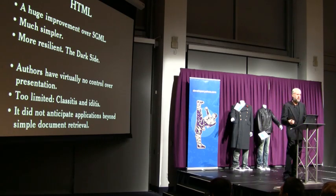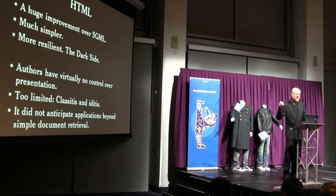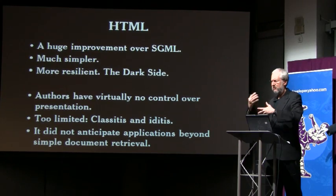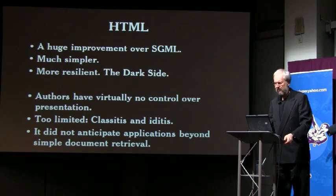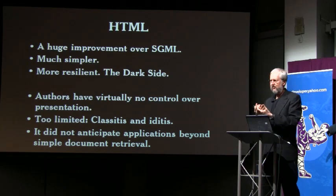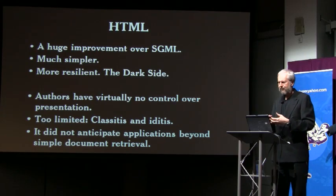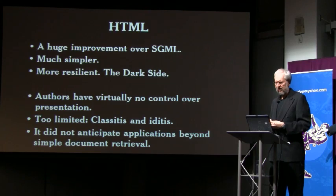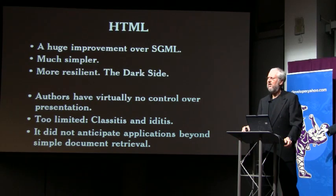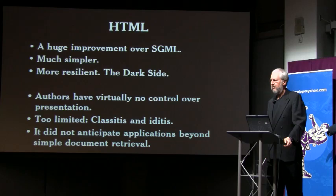HTML was, in my view, a huge improvement over SGML. The thing he got right was making it simpler. SGML was an insanely complicated system. Tim Berners-Lee just took almost everything out and left just a tiny skeletal set of tags. One of the improvements was that it was more resilient: if the browser saw a tag it didn't recognize, it wouldn't throw a fit — it would just ignore the tag and keep processing the text. That turned out to be an extremely important innovation because it allowed for extending the HTML language over time. Had he not done that, growing and maturing the web would have been impossible.